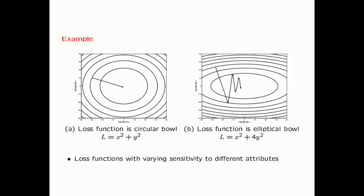Even though the sensitivity of the loss function depends on the exact relationship to the different features, if the features are on very different scales, one feature will naturally tend to have a very different sensitivity to the loss function. For example, if you had two attributes — age and salary — age is typically one or two digits while salary is typically five or six digits. For most reasonable loss functions, it will be far more sensitive to age as compared to salary.